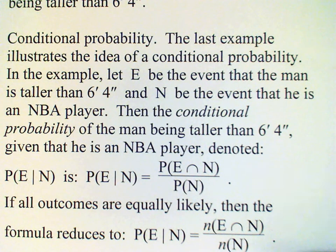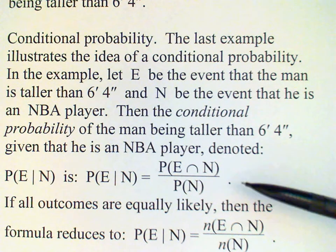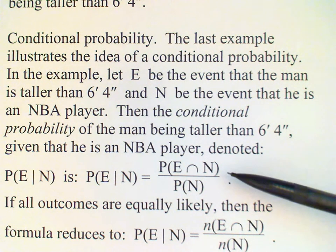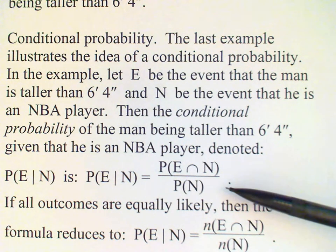And this conditional probability is defined as follows. We find the probability of the intersection of these two events, and then divide by the probability of the conditioning event.